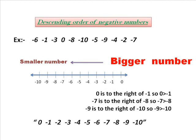Moving on to the last ordering — descending order of negative numbers. I have taken the same example, that is from 0 to minus 10, and arranged them on a number line. As 0 is to the right of minus 1, 0 is bigger number. Minus 1 is to the right of minus 2, so minus 1 is bigger number. Likewise any number to the right is bigger number. The order is: 0, minus 1, minus 2, minus 3, minus 4, minus 5, minus 6, minus 7, minus 8, minus 9, minus 10. As 0 is bigger number and minus 10 is smaller number.